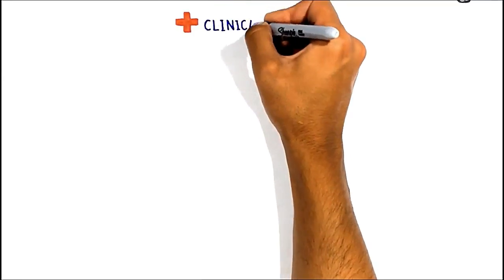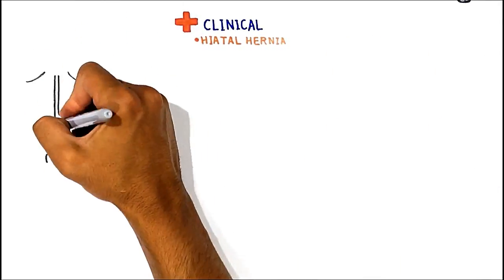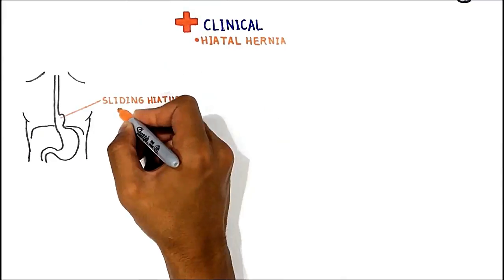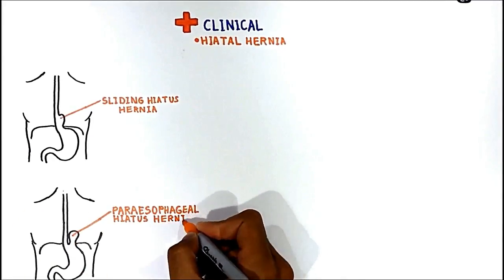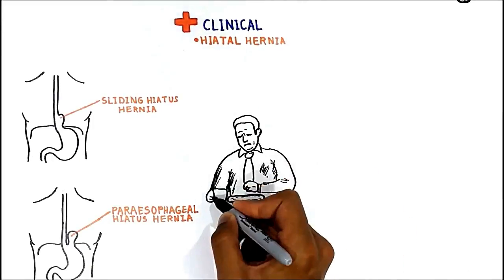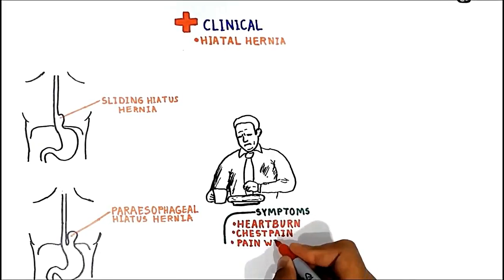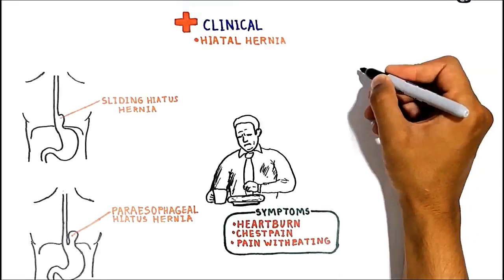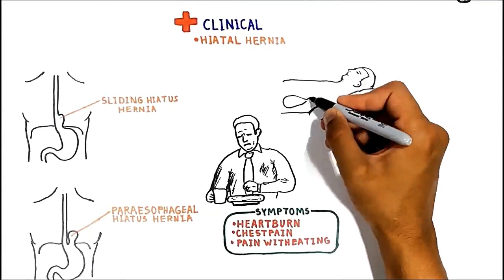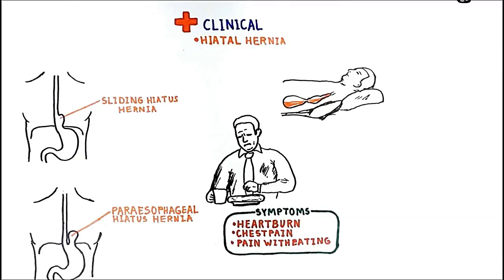In clinical practice, sometimes the upper part of the stomach herniates into the thorax through the esophageal hiatus because of a tear or weakness in the diaphragm, causing hiatal hernia. There are two types: sliding hiatus hernia and paraesophageal hiatus hernia. The most common cause is obesity. Hiatus hernias often result in heartburn but may also cause chest pain or pain with eating. While sleeping, stomach secretions can seep up the esophagus and into the lungs, causing chronic cough, wheezing, and even pneumonia.